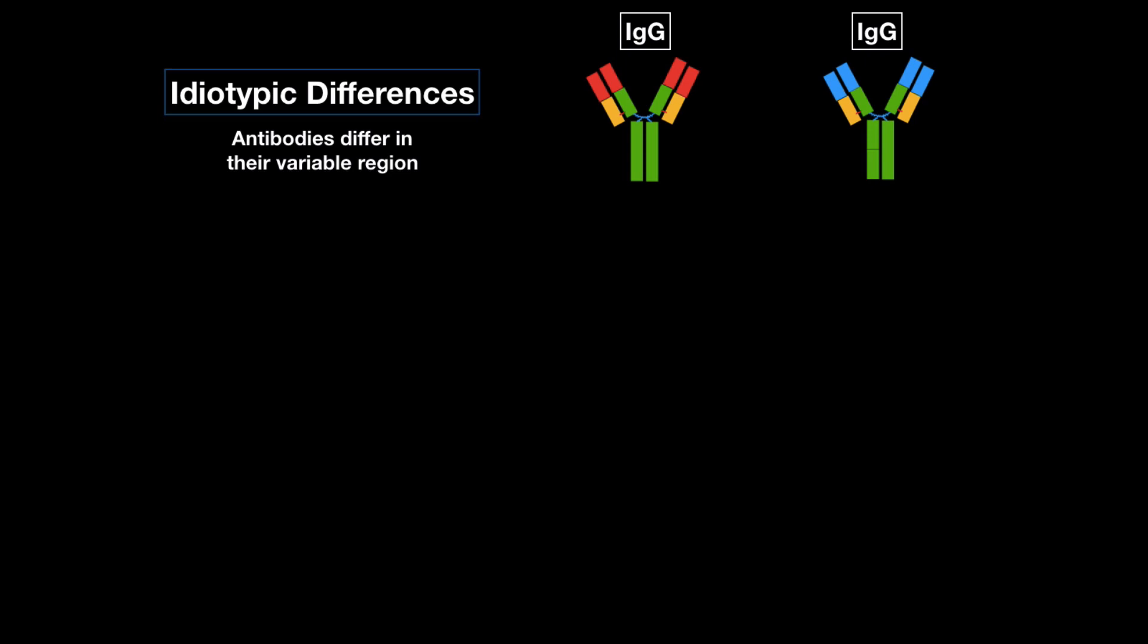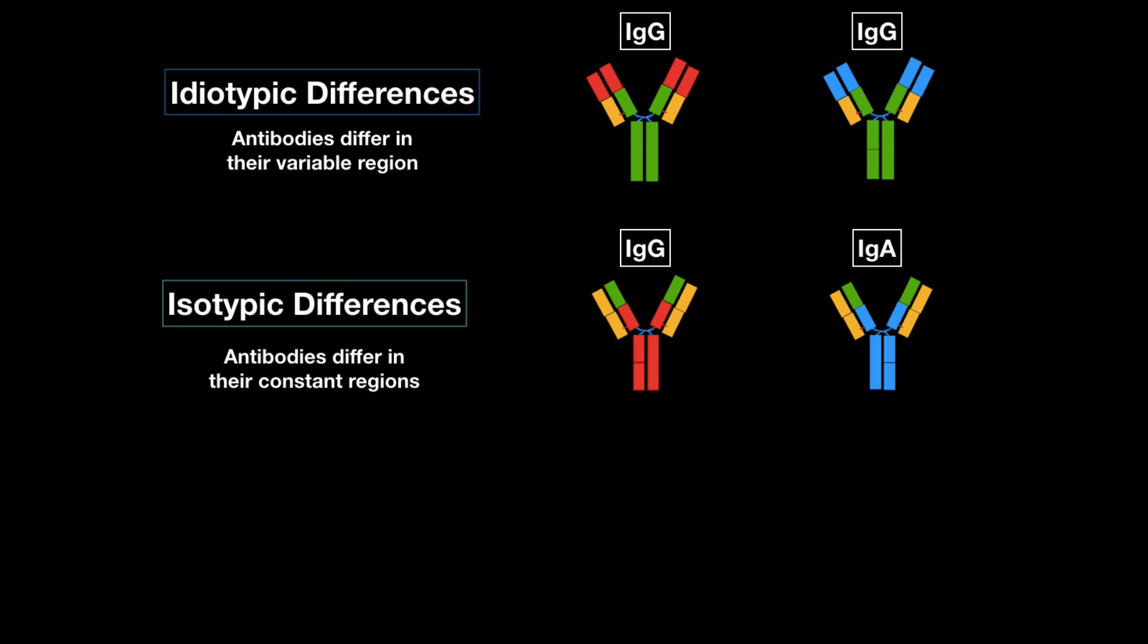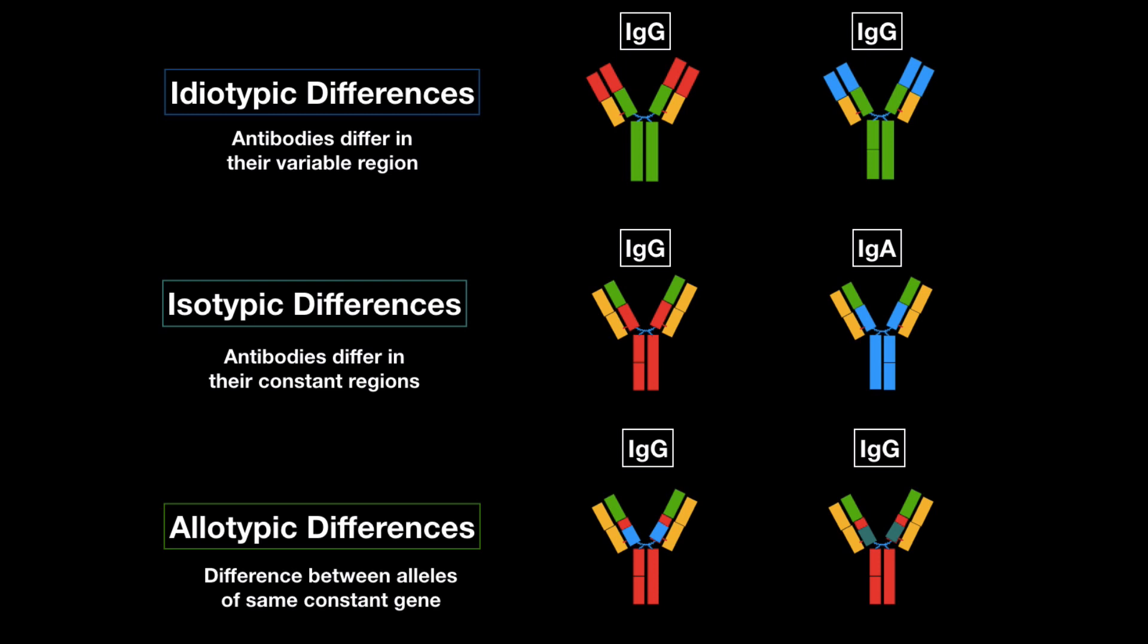We can also have isotypic differences where antibodies differ in their constant regions, and we can have allotypic differences. Remember that one? Where we're going to have two of the same IgG, but they're going to have differences between them because they have different alleles of the same constant genes that codes for CH1.